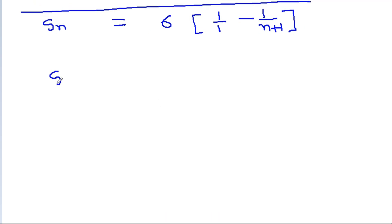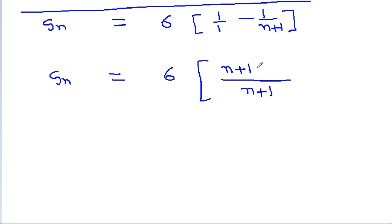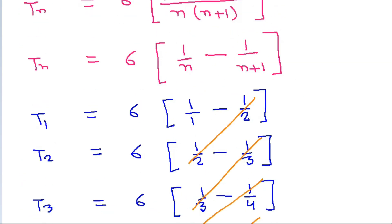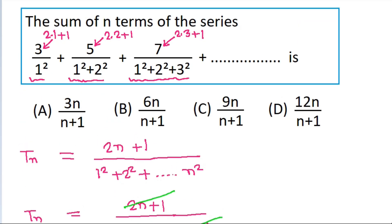Sn is equal to 6 times [(n+1 minus 1) divided by (n+1)]. The 1s cancel and Sn is equal to 6n divided by (n+1). So the correct option is option B.